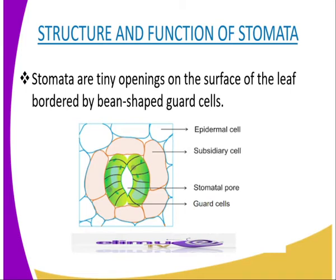The outer side of the guard cells is attached to the walls of the adjacent epidermal cells. Stomata occur mainly on the lower side of the leaf, but less frequently on the upper side of the leaf surface that receives direct sunlight. Stomata open mostly at daytime but close at night. However, their distribution on the leaf surface is related to the habitat.